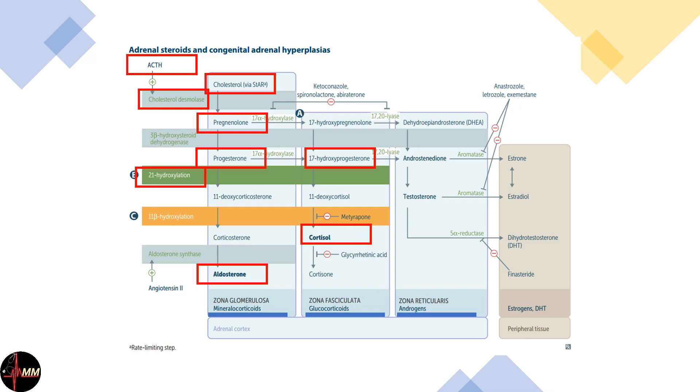In the androgen pathway, pregnenolone is converted to dehydroepiandrosterone (DHEA), and then to androstenedione, which can be further converted to testosterone and estradiol.